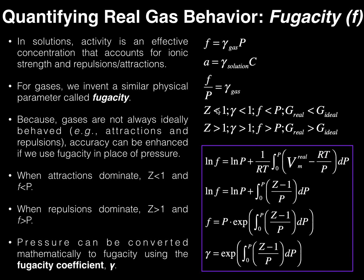When attractions dominate, z is less than 1, fugacity is less than pressure, and the fugacity coefficient is also less than 1. The fugacity coefficient is always a positive number, but it can be less than 1 — this makes sense because for fugacity to be less than pressure, you'd have to multiply pressure by a decimal like 0.8 or 0.9. Additionally, the real free energy of the gas is actually less than what it would be if it were ideal, because attractions create lower energy systems.